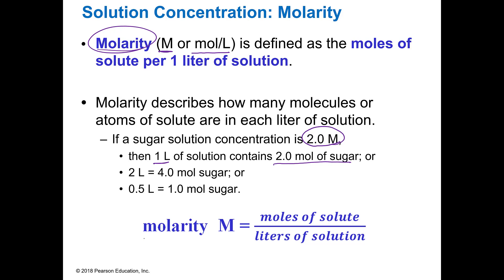Molarity, our most common concentration, is moles of solute per liter of solution. So if you have 2 moles and 2 liters, you divide that, and that ends up being 1 mole per liter — that's a 1 molar solution.